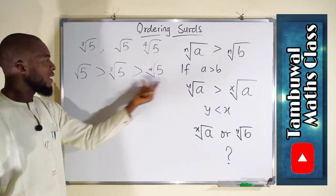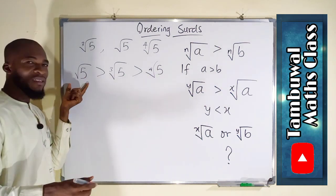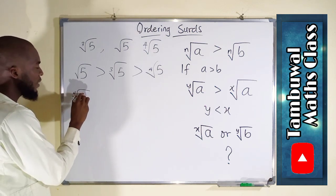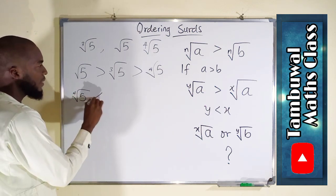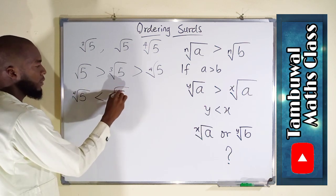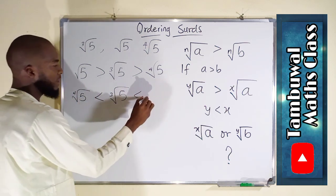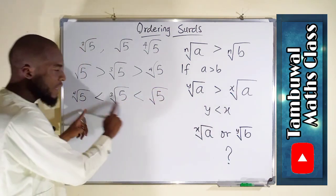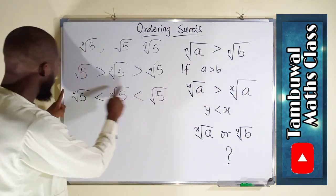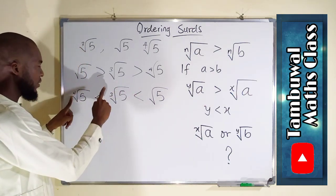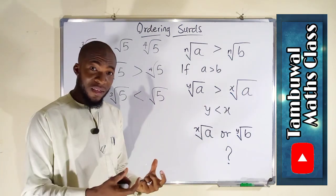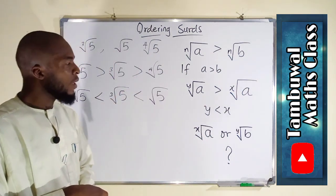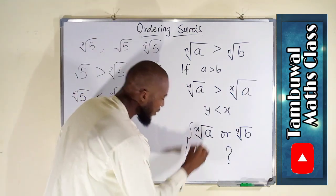The fourth root of 5 is the least, followed by cube root of 5, and square root of 5 is the greatest. In ascending order: fourth root of 5 < cube root of 5 < square root of 5. So if the radicands are exactly the same, consider their degrees — the least the degree, the greater the surd becomes.